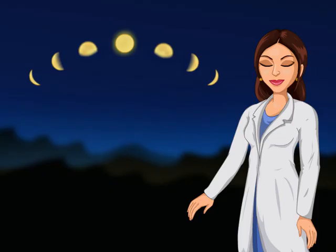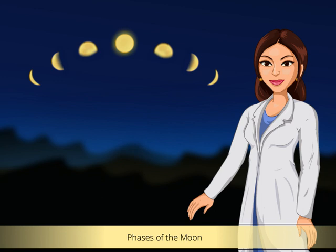We know that the moon moves around the earth. Different shapes of the moon are called the phases of the moon. Let us learn about these different phases of the moon.